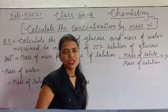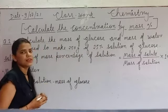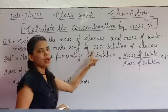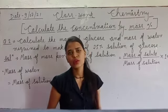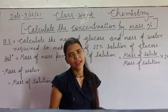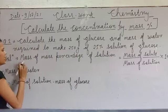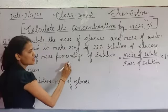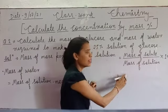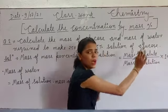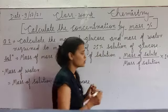Students, question mein mass of solution given hai that is 250 gram, aur percent bhi already given hai — 25%. Hame calculate karna hai mass of solute yani ki glucose aur mass of solvent yani ki water. The formula is: mass percentage of solution = (mass of solute / mass of solution) × 100. Ab hum isi formula mein apni values put karenge.